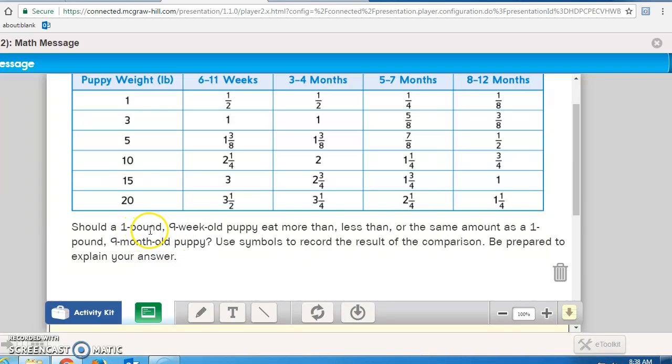So look at the difference. A 1-pound, 9-week-old puppy should eat 1/2 a cup, and a 1-pound, 9-month-old puppy should eat 1/8 of a cup. Well, 1/2 would be 4/8, so they actually eat less. Be prepared to explain your answer. Show the equivalencies: 1/2 would equal 4/8, and it's telling you the 9-month-old should only eat 1/8 of the amount, so you'd actually be giving the 9-week-old puppy 3/8 more.